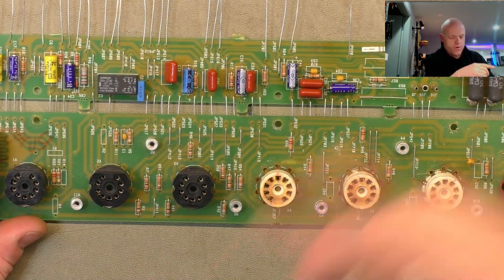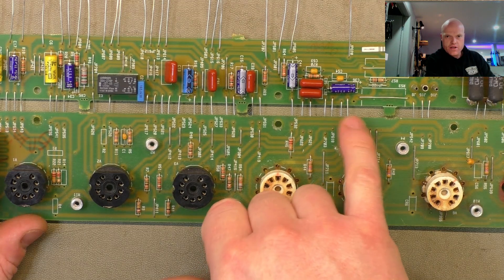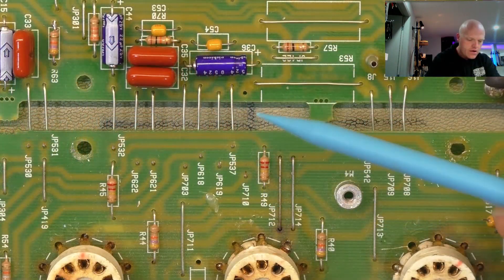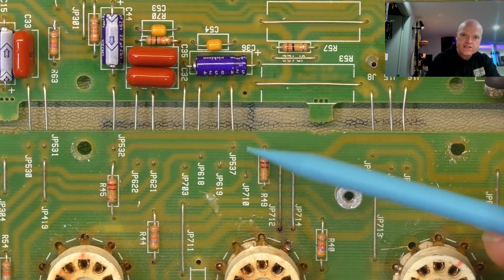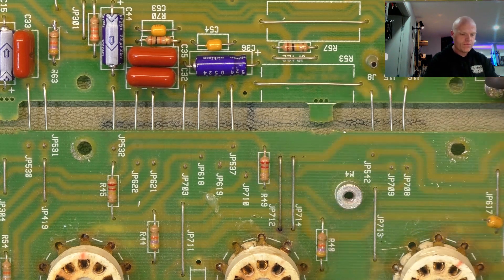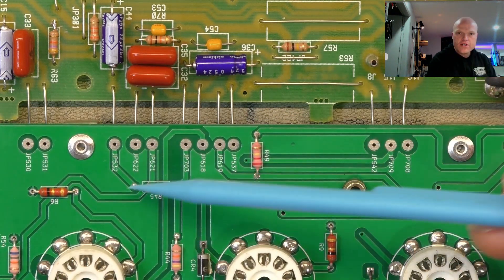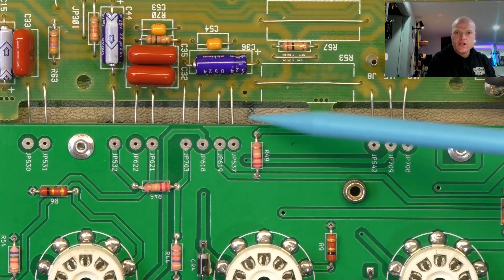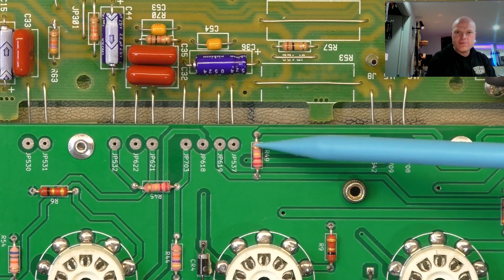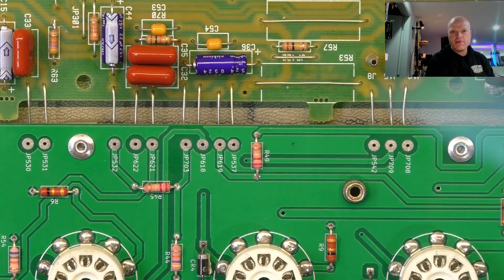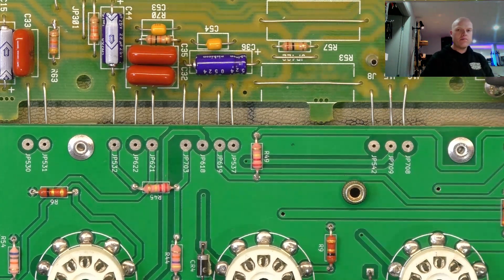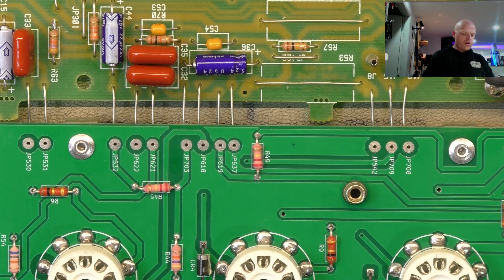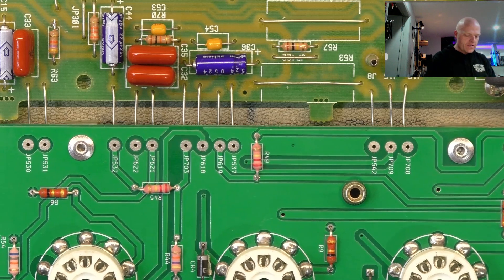Alright, one important thing of note is one of these connections is no longer used. That connection there was previously a jumper, and that corresponds to JP710. So on the board you can see one through seven are used, and then there's not even a hole for that one. So that's a bit confusing. Maybe I should have just put an empty pad there, but hey, it's my party and I'll cry if I want to.